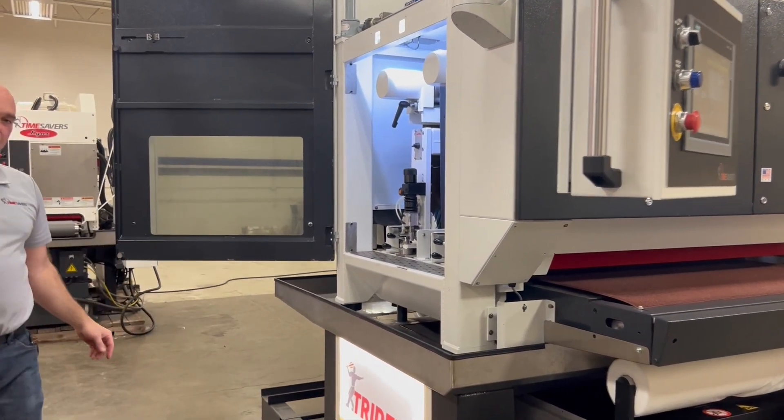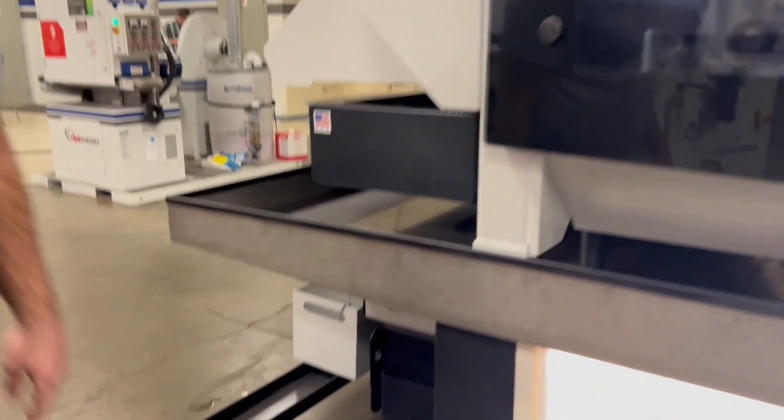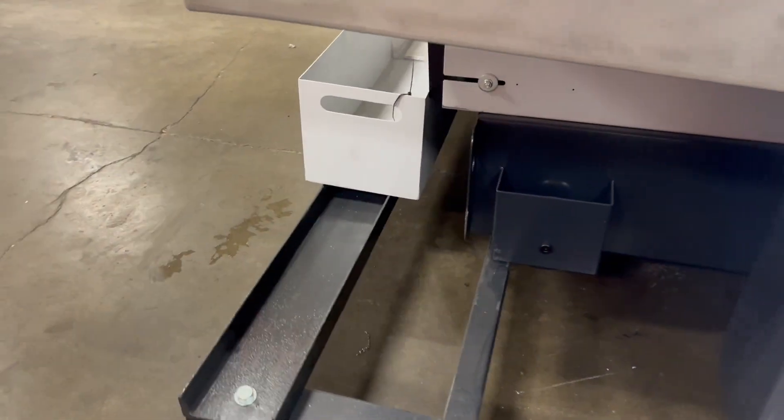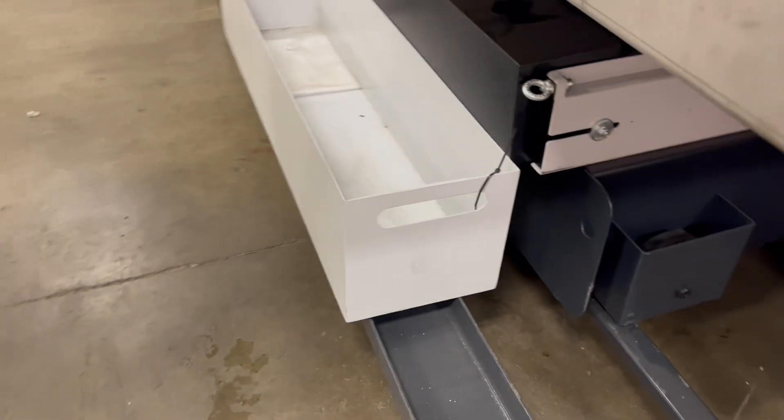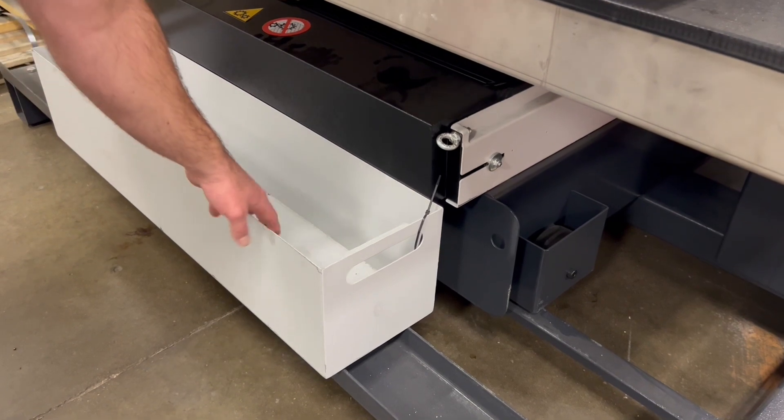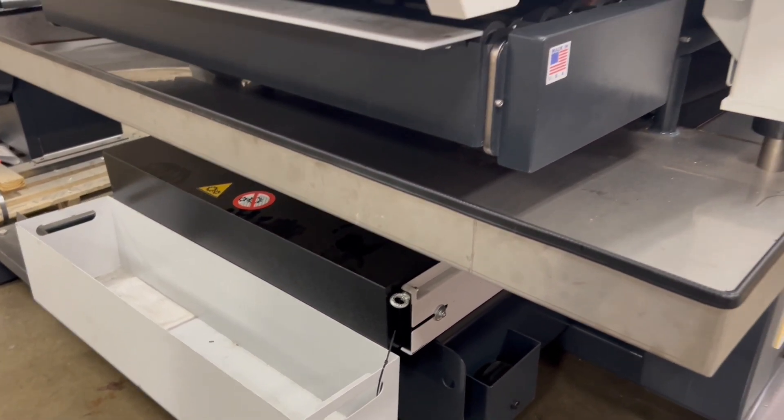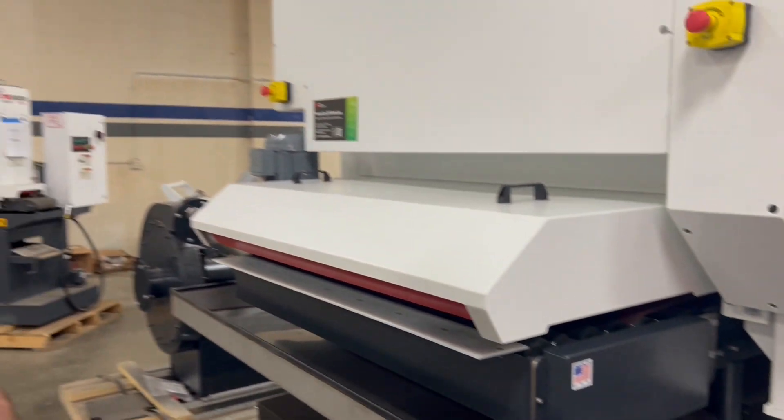On the back side here, when the filter paper becomes loaded with swarf, there is a float switch so it can automatically advance the filtration paper and then dump it into this container here for disposal. We also do have a manual jog feed for the filter paper also.